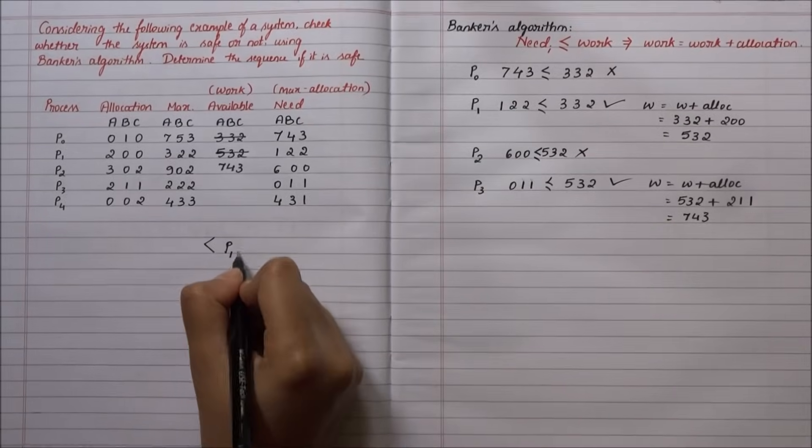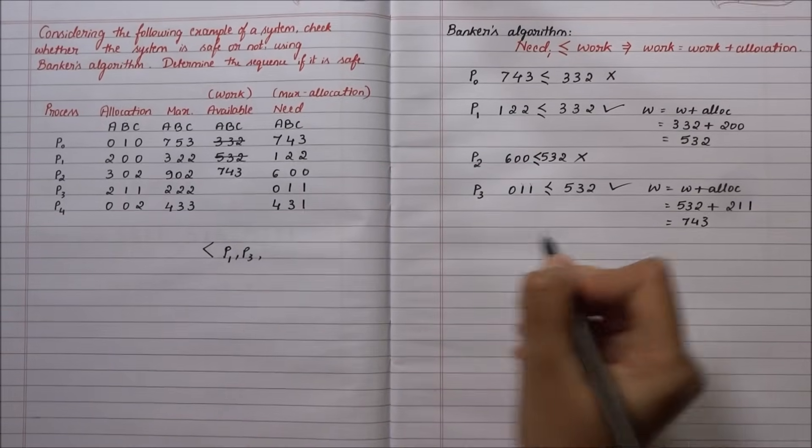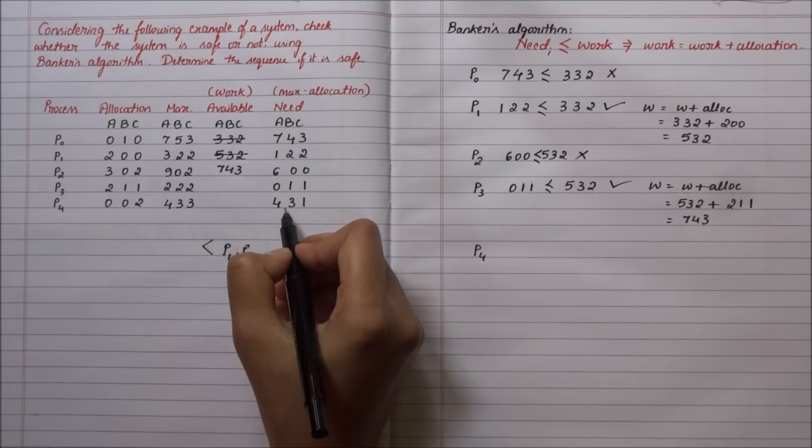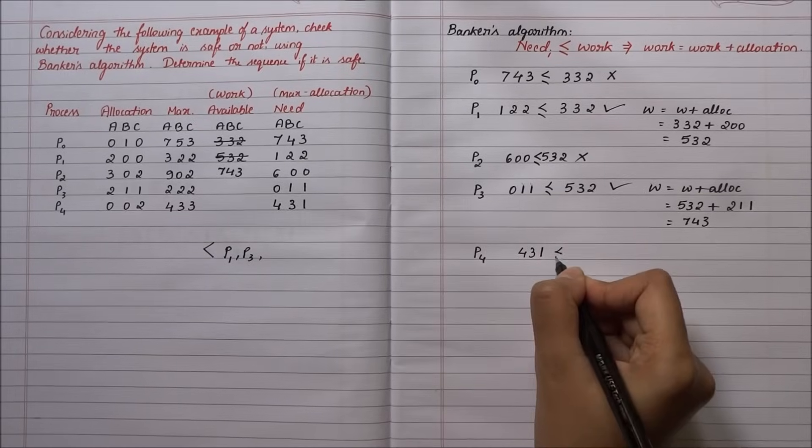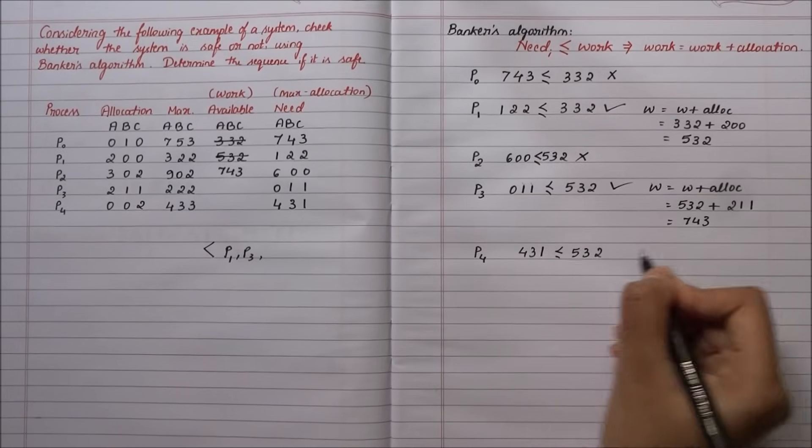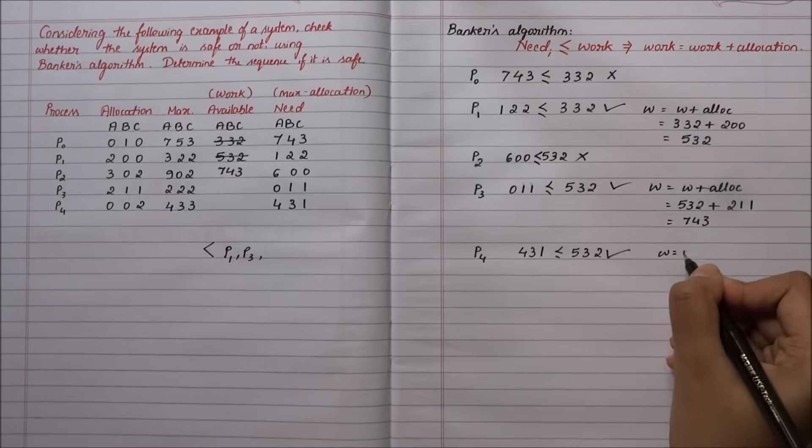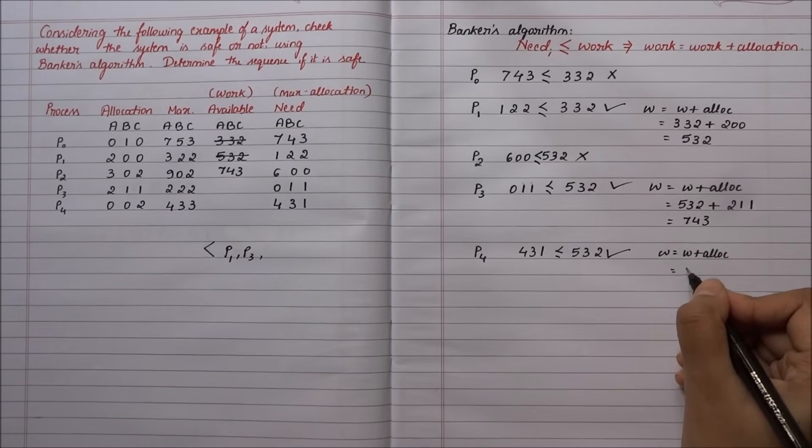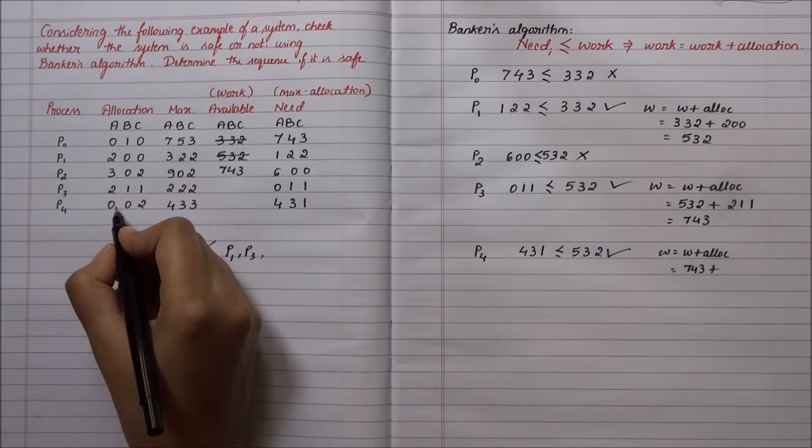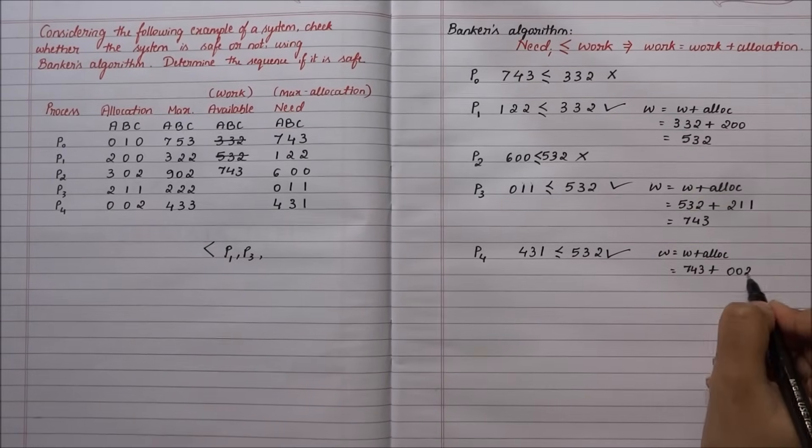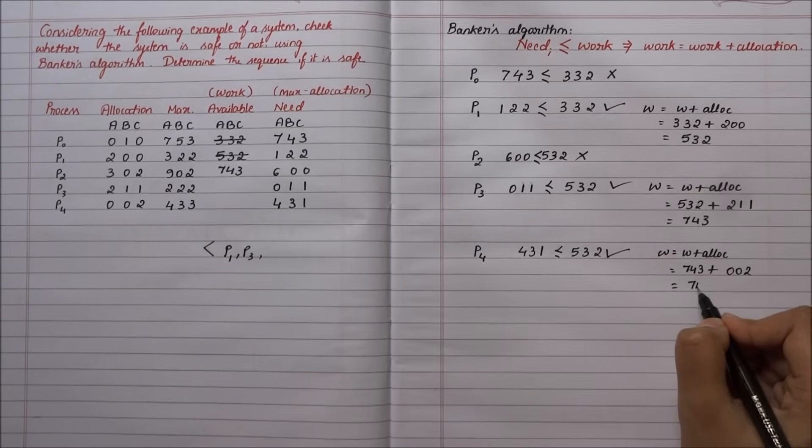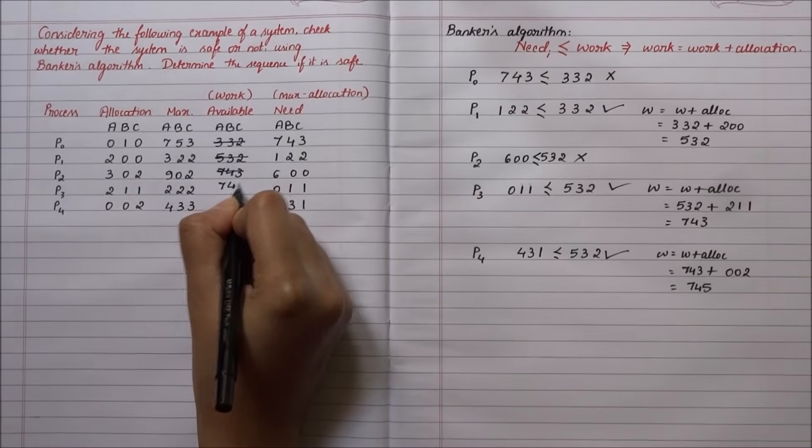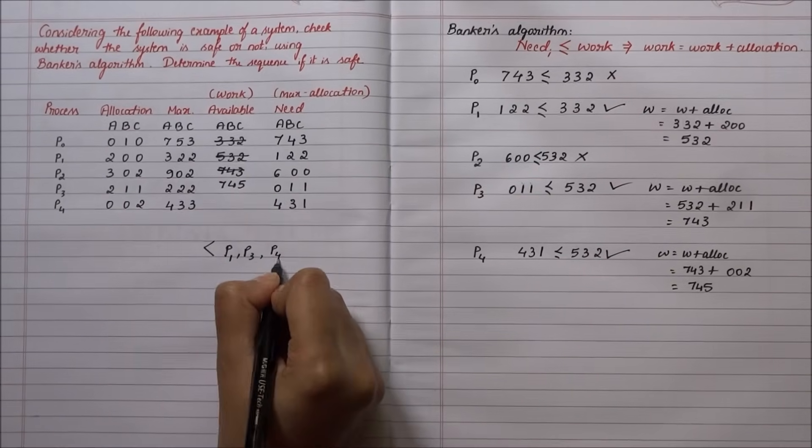Let me go for P4. Need of P4 is 4-3-1, less than or equal to 7-4-3. This is true. Work becomes work plus allocation: 7-4-3 plus allocation of P4, which is 0-0-2, equals 7-4-5. P4 has entered the safe sequence.